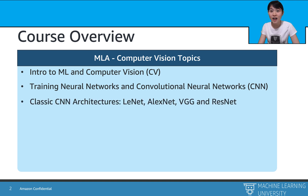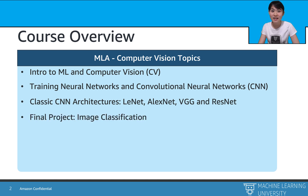Third, we will explore a variety of convolutional neural network architectures, from LeNet in the 1990s to modern convolutional neural networks such as AlexNet, VGG, and ResNet. With these architectures, you will be able to build an image classification model in the final project.